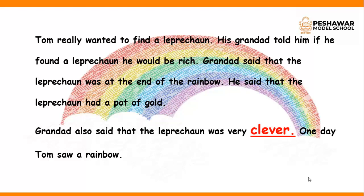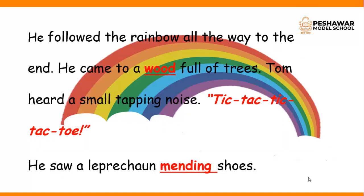The story starts with Tom. Tom really wanted to find a leprechaun. His granddad told him that if he found a leprechaun, he could be very rich. Granddad said that the leprechaun was present at the end of the rainbow and that the leprechaun had a pot of gold. Granddad also said that the leprechaun was very clever, which means very intelligent.